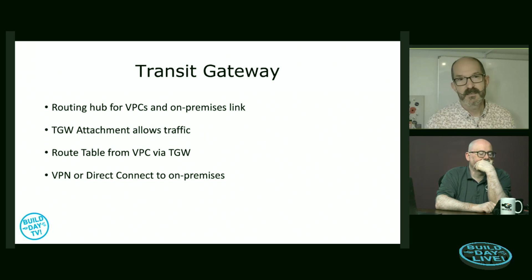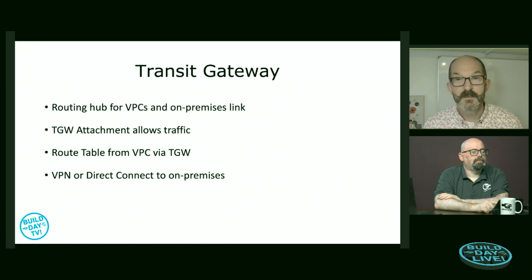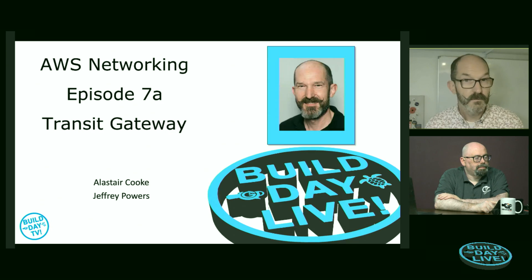So, Transit Gateway is our hub for routing between multiple VPCs and your on-premises environment. It allows you to unify and simplify routing across all of your VPCs using attachments, with a simple route table pointing to the Transit Gateway. Back to on-premises, you can use either a VPN or Direct Connect. Stay tuned for the next video where we'll do hands-on and actually build and demo a Transit Gateway. Subscribe, like, and comment — we'll try to do an episode Q&A in the future. Until next time!